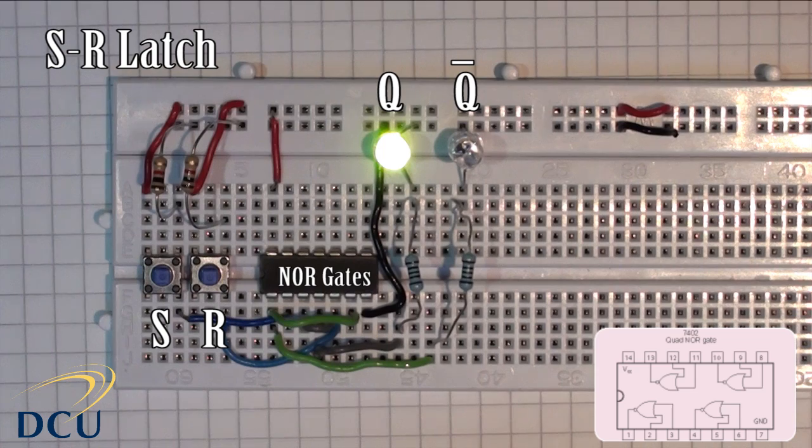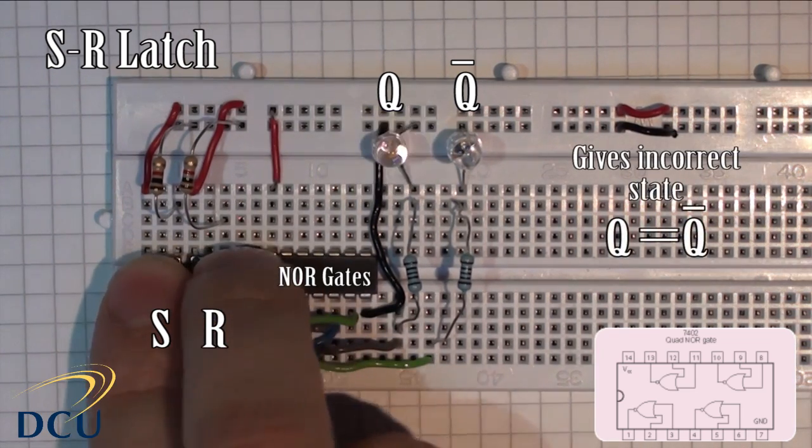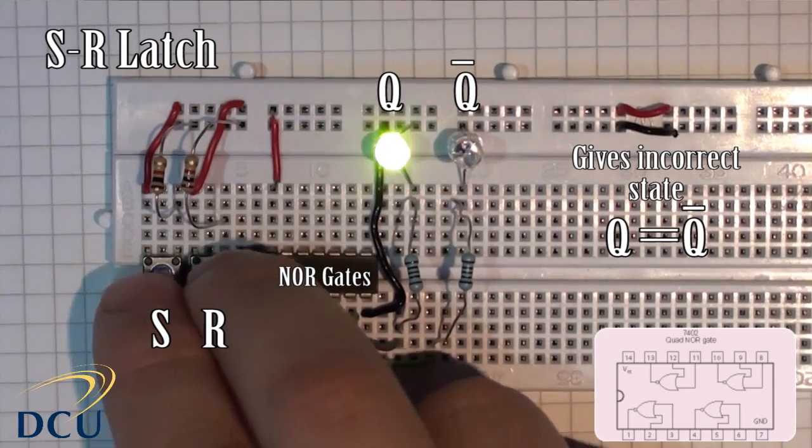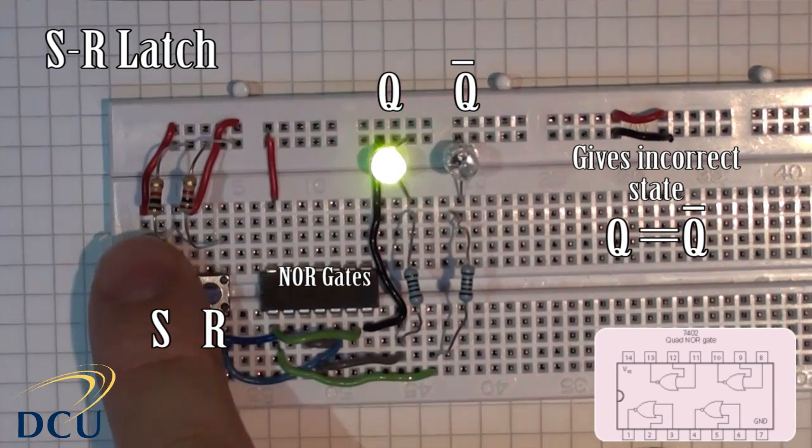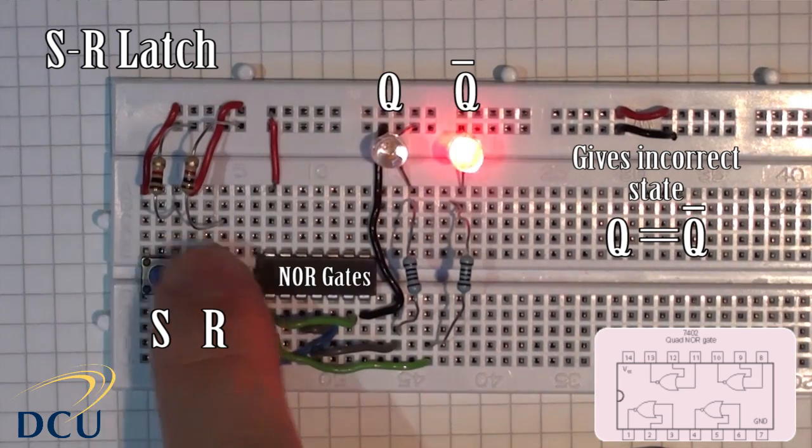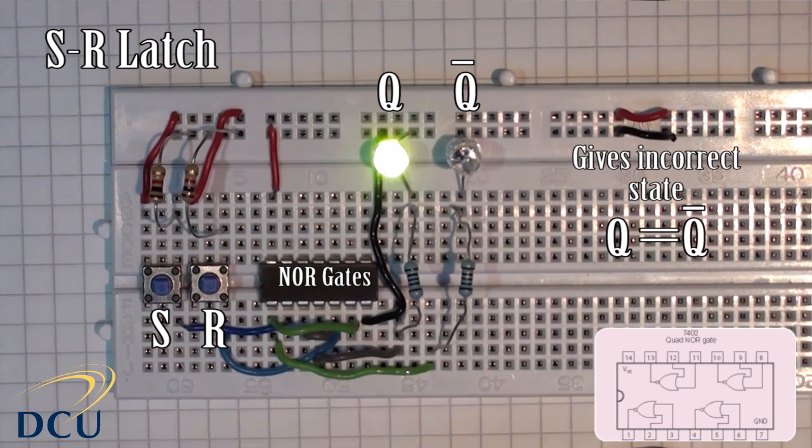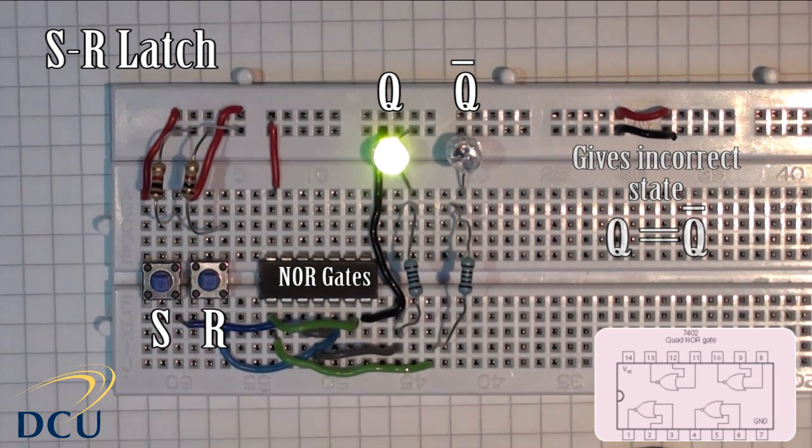One important thing about this particular circuit is that we are not allowed to input 1, 1. And this input of 1, 1 will give unpredictable outputs. So that's one downside. So two switches gives four combinations, but only three of those are valid.